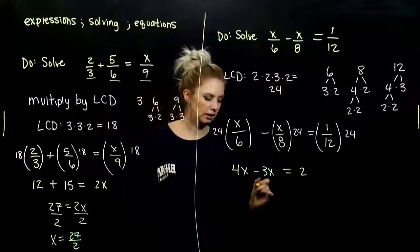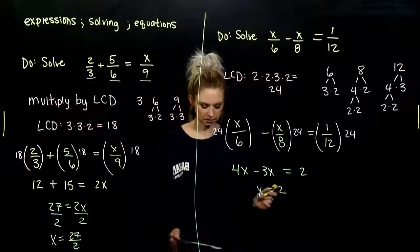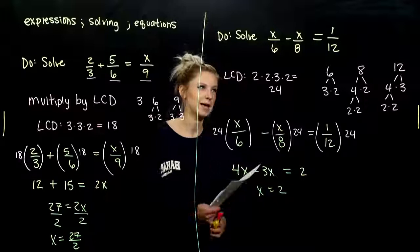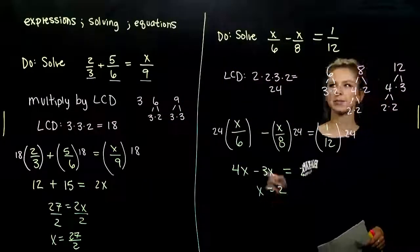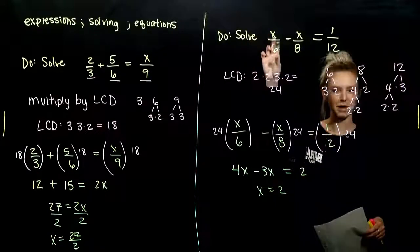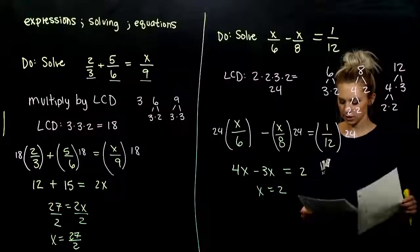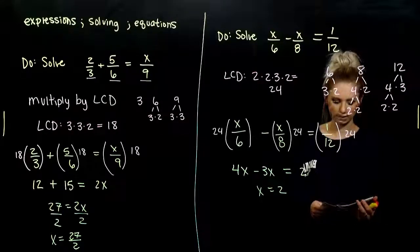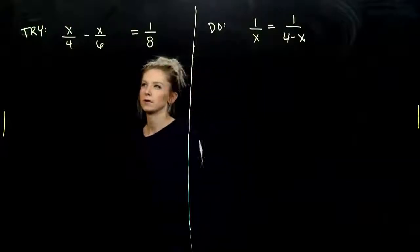When we combine our like terms on the left, I get the value x out. So we've solved, we're finished. And again, how can we check to make sure that it's true? Plug it back into the original, make sure that it holds true. So go ahead and try the next one. Use the LCD to clear out the denominators. Solve for x.